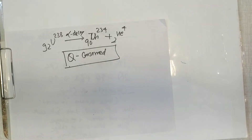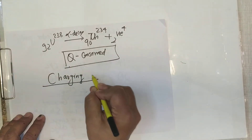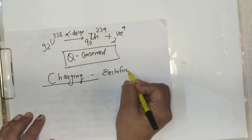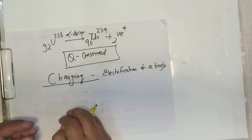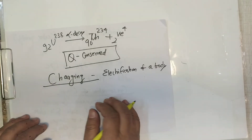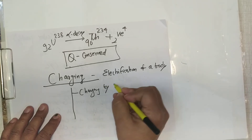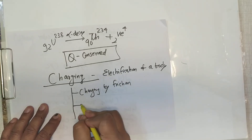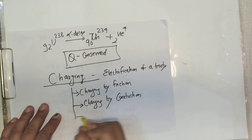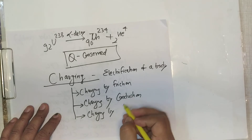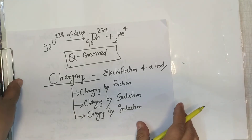Now comes the concept of charging, which means electrification of a body. There are three types of charging: charging by friction, charging by conduction, and charging by induction. Charging by induction is the most important.